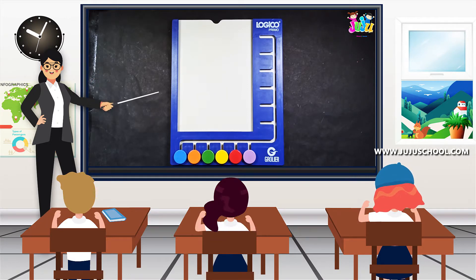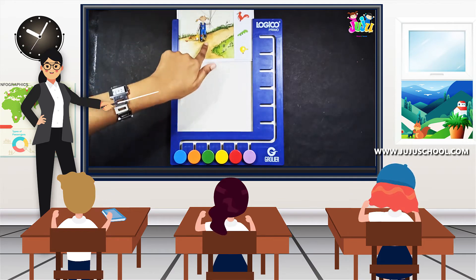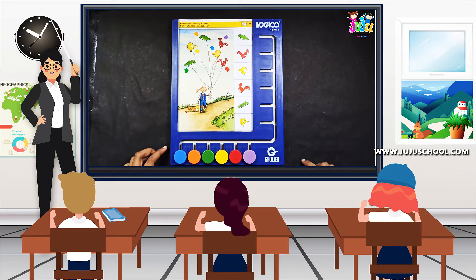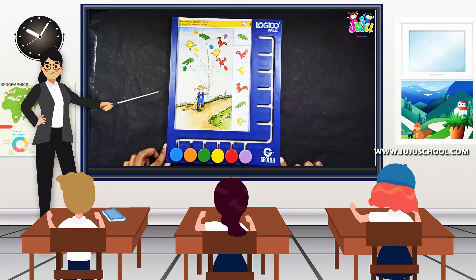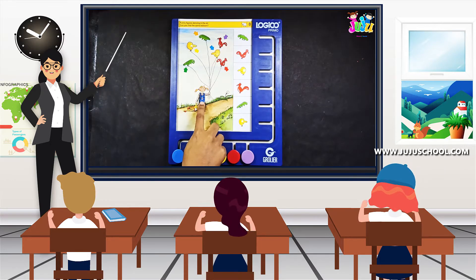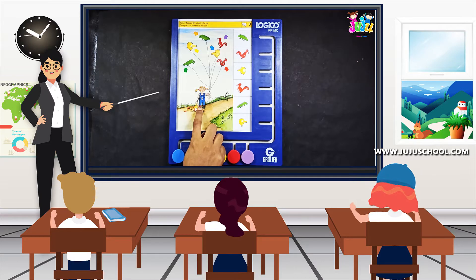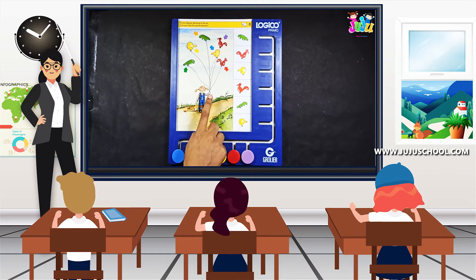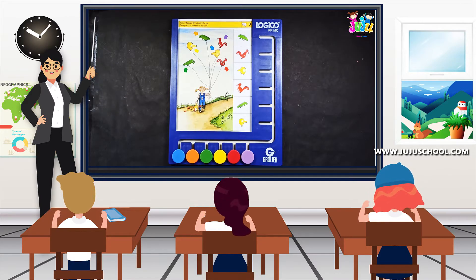So let me insert a card. This is the sheet we're going to do today. Okay kids, listen carefully. Can you see there is a girl standing and she has a bunch of balloons in her hands?